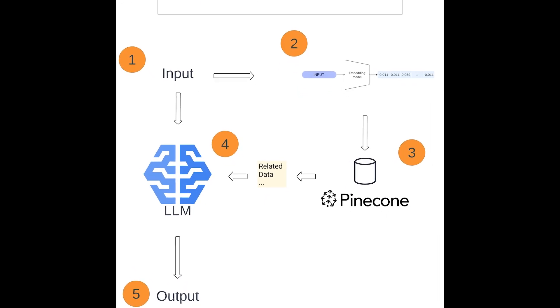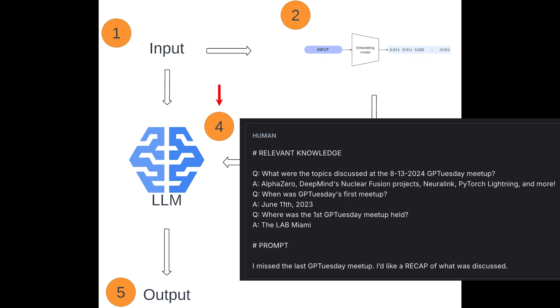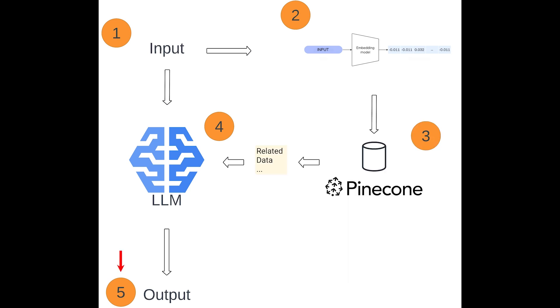Here is a diagram walking us through what just happened. One: we sent some prompt to our agent. Two: our prompt got converted into a vector. Three: we searched our Pinecone knowledge base for the vectors most similar to the vector representing our prompt, and Pinecone returned the original data represented by the highest matching vectors. Four: we combined the most relevant data with the original prompt and sent that to our LLM. And five: we returned our final output.